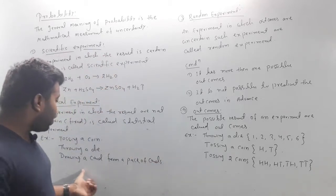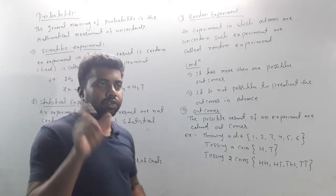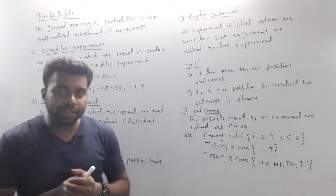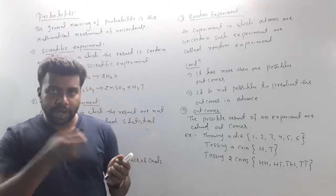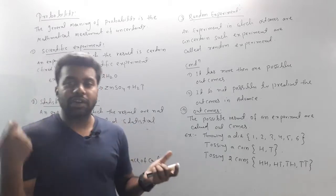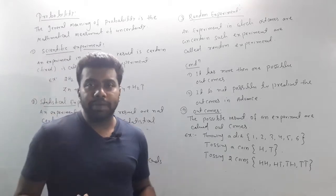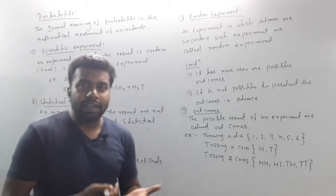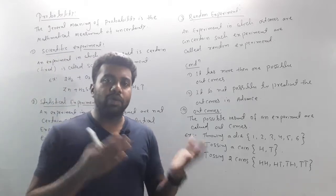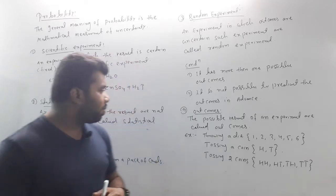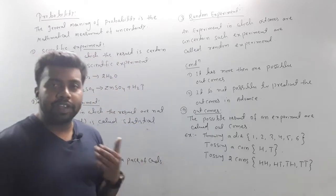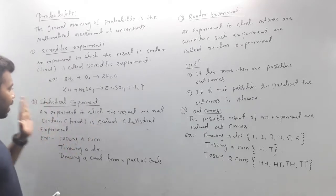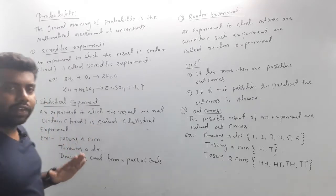Another example: draw a card from a pack of 52 cards. You randomly pick one card — it could be any card, a jack, a king — the result is not fixed. So as you can see, the result of a scientific experiment is fixed, but the result of a statistical experiment is not fixed.